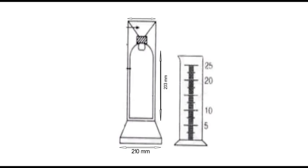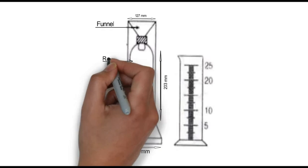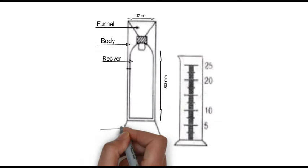It essentially consists of a circular collecting area of 12.7 centimeter diameter connected to a funnel. The rim of the collector is set in a horizontal plane at a height of 30.5 centimeters above the ground level. The funnel discharges the rainfall catch into a receiving vessel. The funnel and receiving vessel are housed in a metallic body.